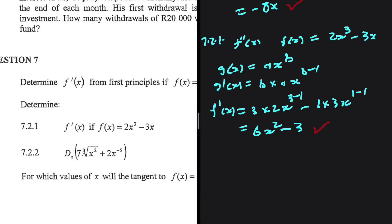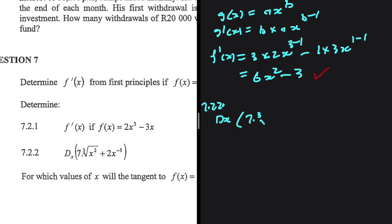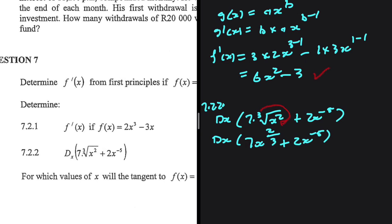That's 7.2.1. The technique for 7.2.1 and 7.1 will appear in your final exam — the variables and numbers change but the technique is the same. For 7.2.2 we have the derivative of 7 multiplied by the cube root of x squared plus 2x to the minus 5. We rewrite this as 7x to the power 2 over 3 plus 2x to the minus 5 — everything is now in standard form.